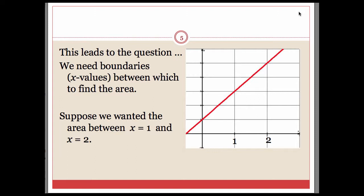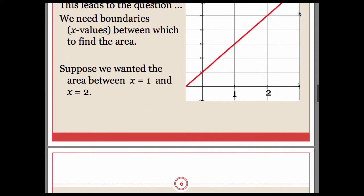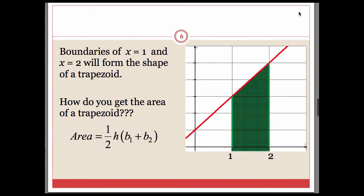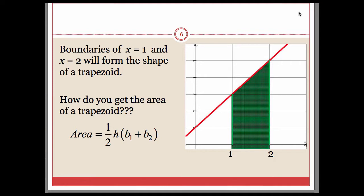Suppose we were to consider finding the area in between x equals 1 and x equals 2. If you take a look at it, maybe look at it sideways, tilt your head either left or right, it basically looks like a trapezoid. One thing we could do is use our geometry rules to get the area of a trapezoid to find the area of that shaded region.